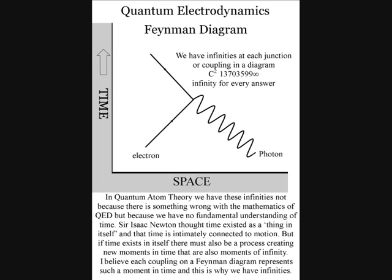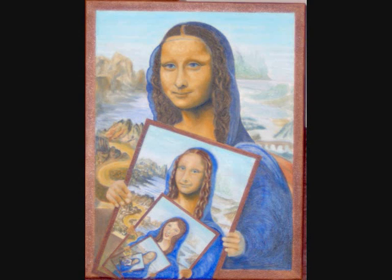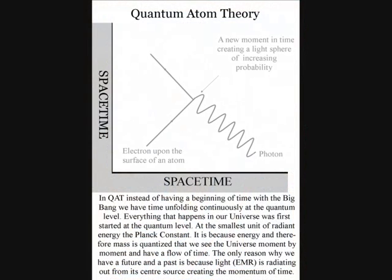Sir Isaac Newton thought time existed as a thing in itself and that time is connected to motion. But if time exists in itself there must also be a process creating new moments in time that are also moments of infinity.